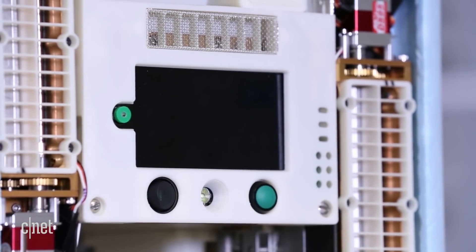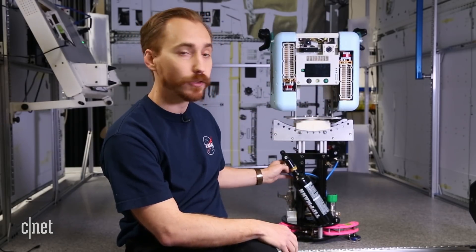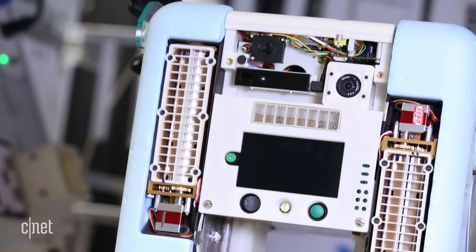You can see the touchscreen, the intake for fans that keeps the circuits inside cool, and different cameras on the top that help it navigate where it is on the space station.